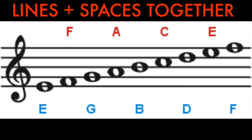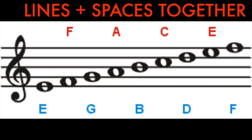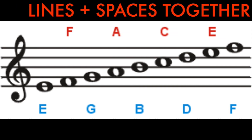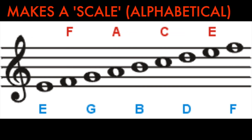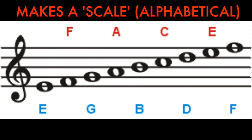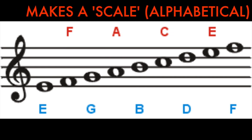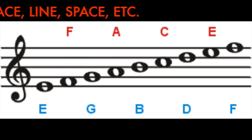When we put our lines and spaces together it becomes alphabetical — it makes a scale. A scale being alphabetical: E F G A B C D E F.